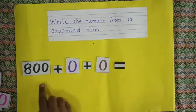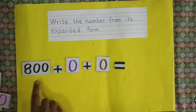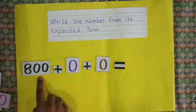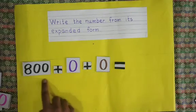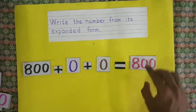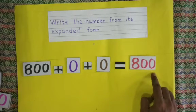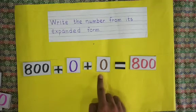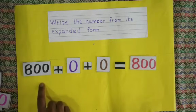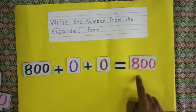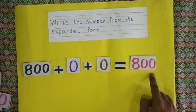See: 8 hundreds, how many tens? Zero tens. How many units? Zero units. So you read only the hundreds because here zeros are there — eight hundred. Whenever tens place and units place is zero, you have to write only hundreds. Write 800 and put zero at the tens place and units place.